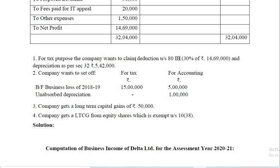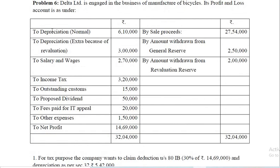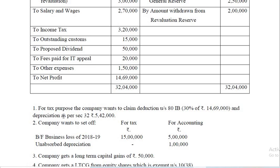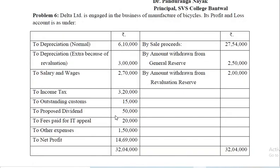Regarding deduction under Section 80IB: it is not simply 30% of 14,69,000. Rather, you have to compute the business income and after set-off of the 15 lakh brought forward loss, calculate 30% on whatever remains. Not on 14,69,000 — that is the profit as per financial accounting. You compute business income, then calculate 30% after all set-offs and adjustments. On the debit side, depreciation of 9,10,000 is added as a disallowed item, and 5,42,000 — depreciation as per Section 32 — is to be deducted. Note that depreciation as per Section 32 will not be taken while computing book profit.